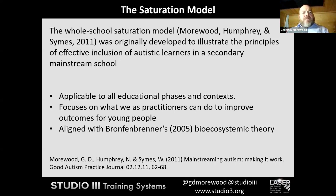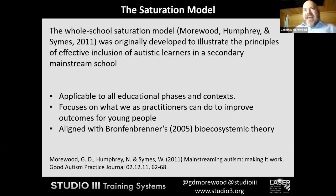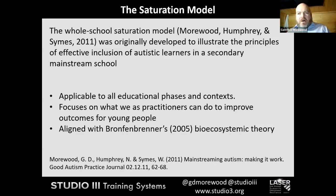We were a mainstream school with 1,300 children aged 11 to 16 but developed a way of working as part of the whole school culture and system that was focused on our autistic learners — and actually that benefited everybody. Although this was developed around including autistic learners in mainstream school, good strategies for young people with additional needs are good strategies for everybody.